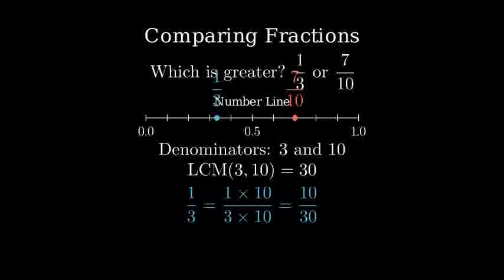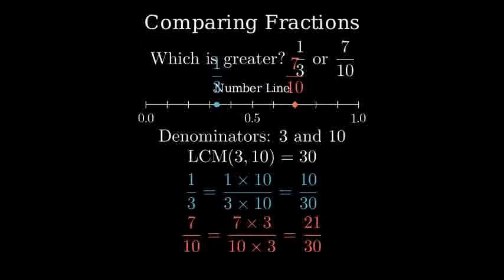Now, let's convert seven-tenths to the same denominator. We multiply both top and bottom by 3. This gives us 21-thirtieths.